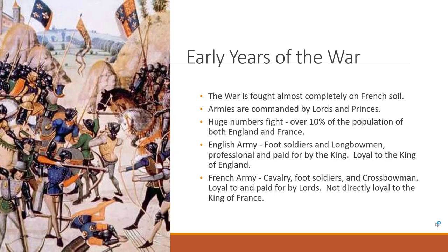The English army was made up mostly of foot soldiers and longbowmen—a professional, paid force loyal directly to the king. The French army consisted mostly of cavalry, foot soldiers, and crossbowmen, loyal to and paid by lords, who were then loyal to the king of France. So French soldiers were not directly loyal to the king the way English soldiers were.